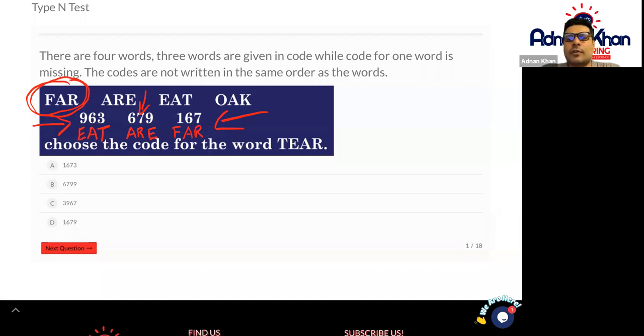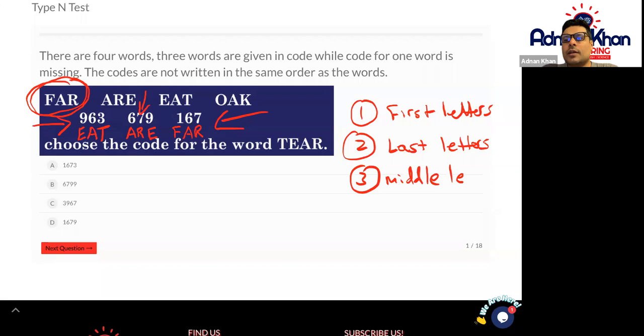I always follow the following pattern: look at the first letters to see if there's anything in common, look at the last letters, and then you can follow the middle letters as well. This is the pattern that I generally use. You don't have to use this pattern. You could do it your own way as well. Now let's work out the final bit, which is trying to work out the code for the word TEAR.